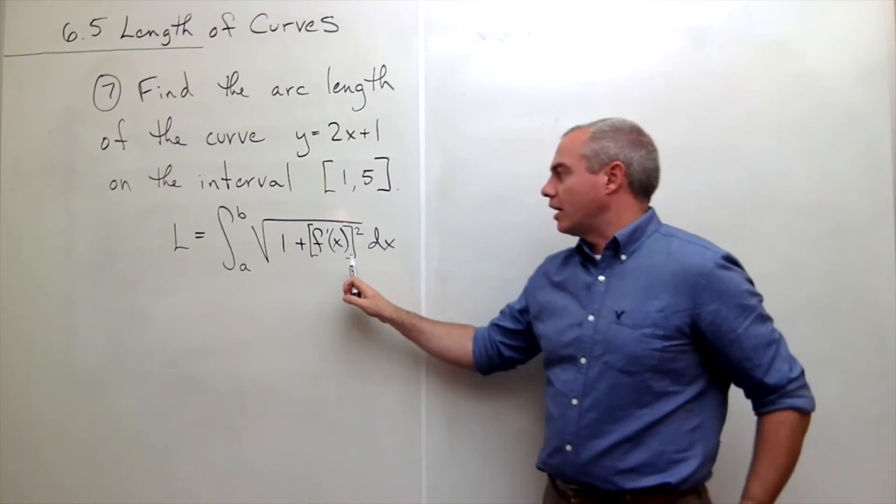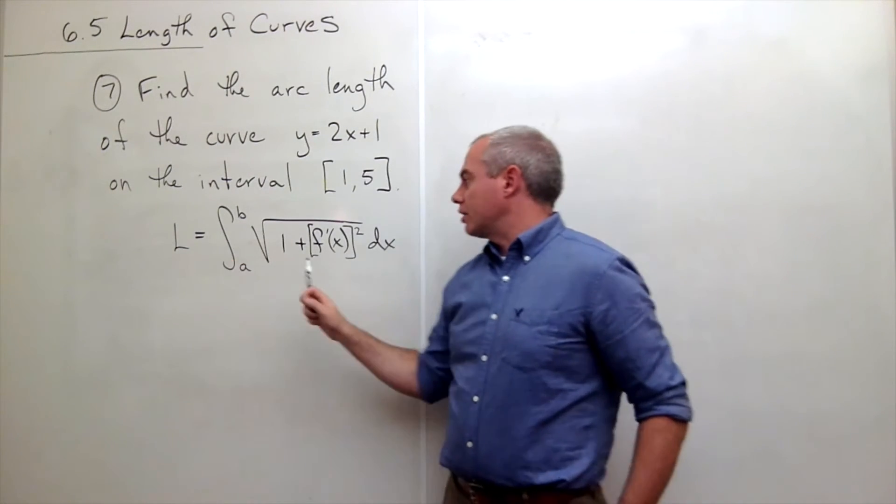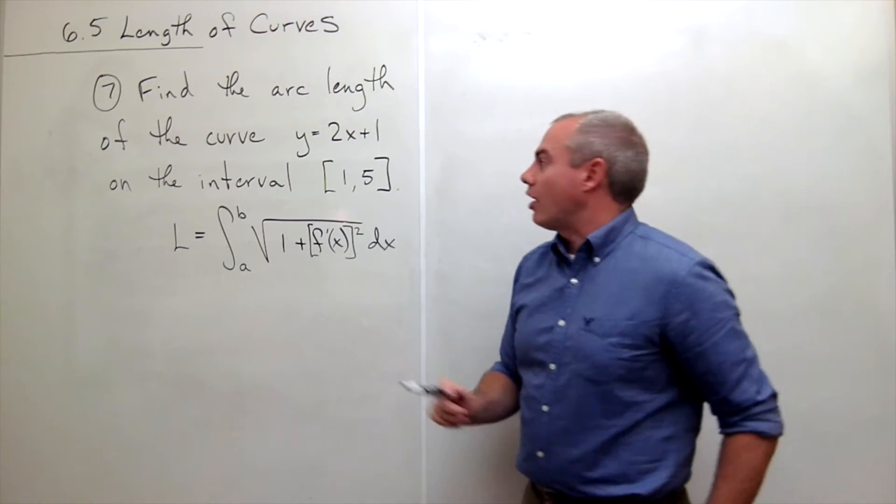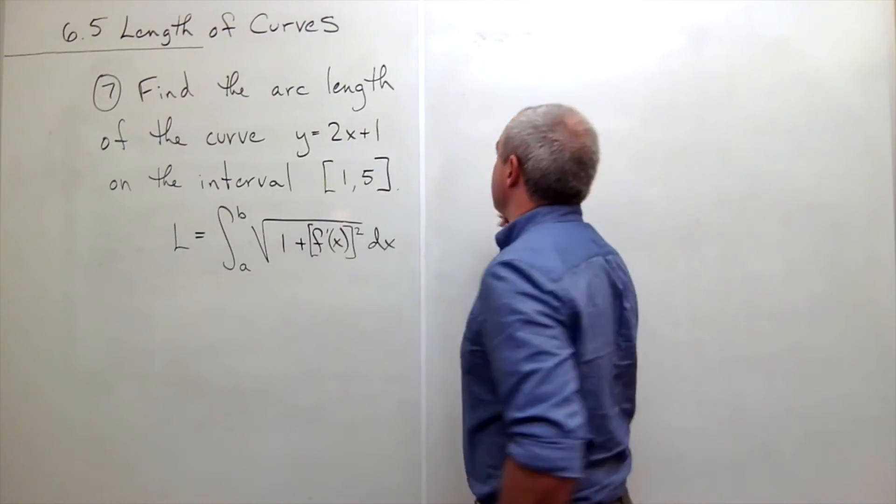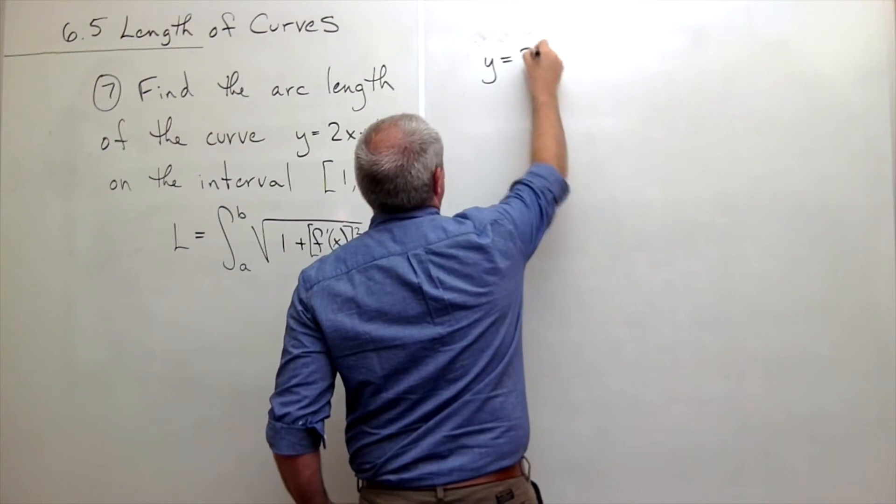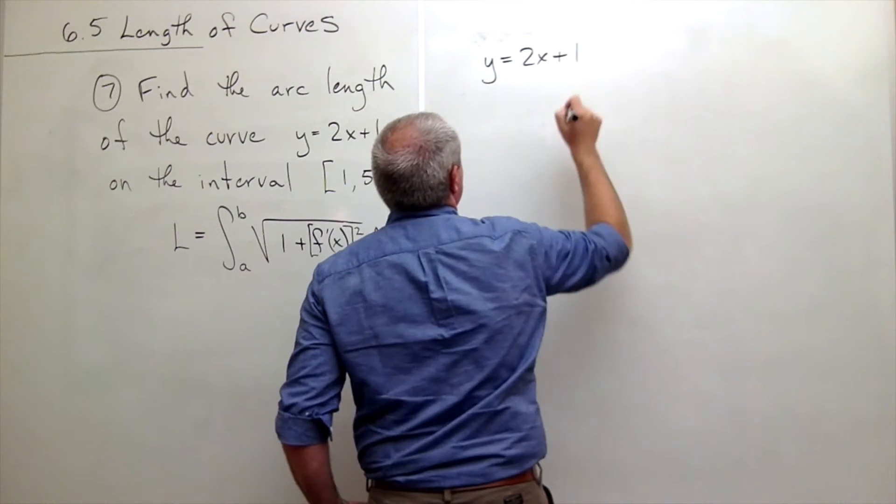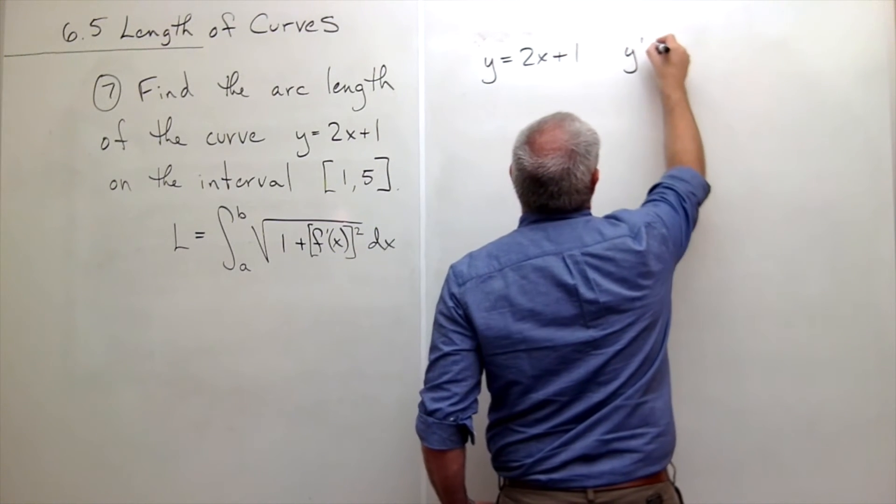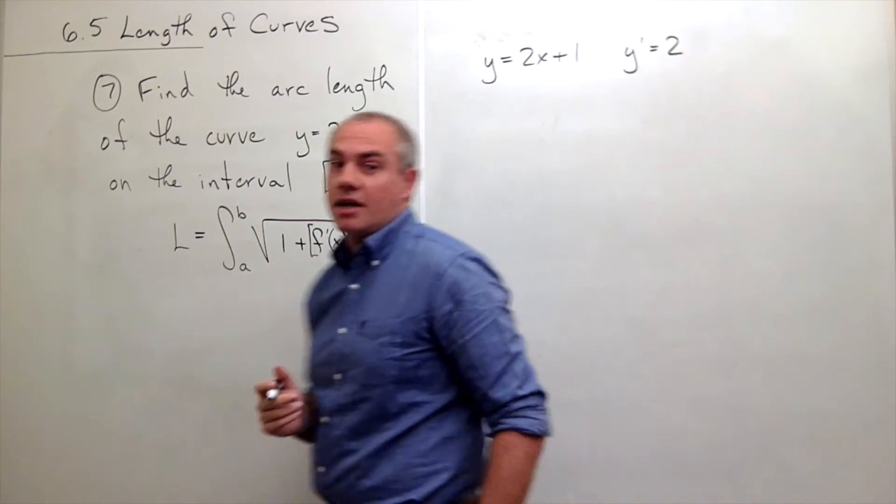This is how I find my arc length. I need to know the derivative of my function. I already know what my function is. My function is y equals 2x plus 1, and so the derivative y prime is just equal to 2 in this case.